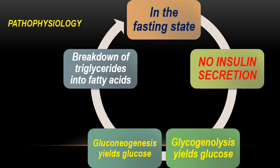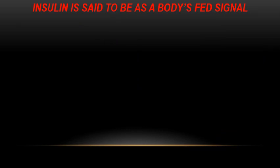When a normal individual enters a fasting state with no food intake, there is no insulin secretion from beta cells, causing a slight depression in blood glucose. This stimulates glucagon production from alpha cells, which stimulates glycogenolysis in the liver to yield glucose, and gluconeogenesis — yielding glucose from protein breakdown. There is also breakdown of triglycerides into fatty acids in adipose and muscle tissue. Thus, insulin is regarded as the body's 'fed signal' — its presence indicates the patient has taken a meal.